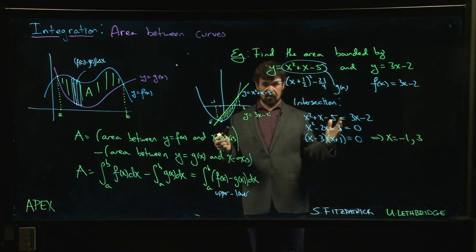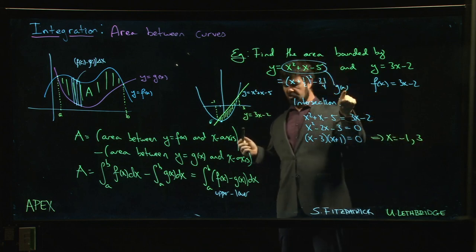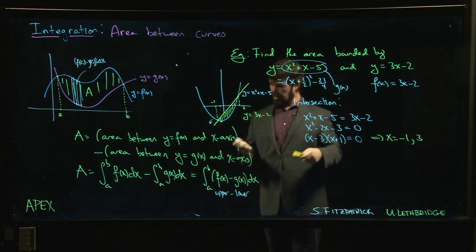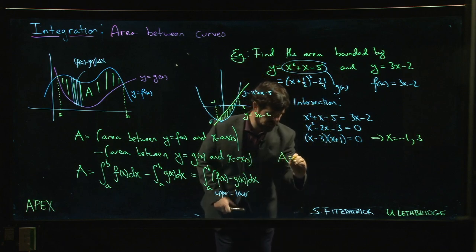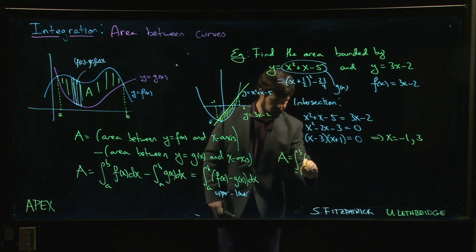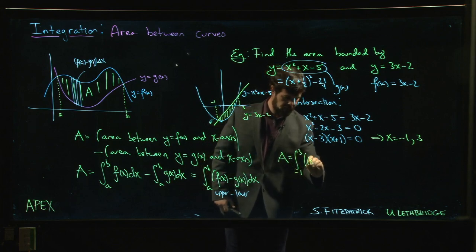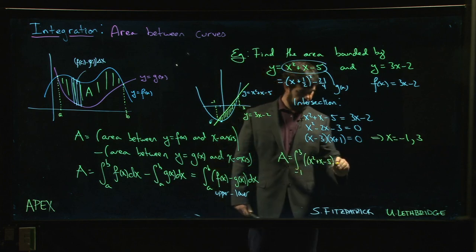Alright, well now we have everything we need. We've got our a, we've got our b, we've got our f(x), we've got our g(x), we've got our formula. So we put it together. Area is going to be equal to the integral from -1 to 3 of f(x) minus g(x).